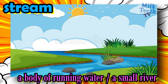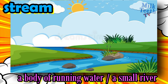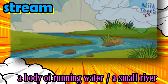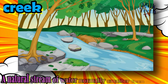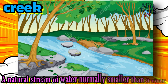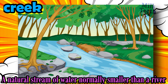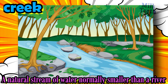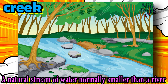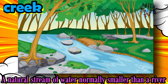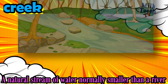Stream: a body of running water, a small river. Creek: a natural stream of water normally smaller than a river. Technically, a river, a stream, and a creek are the same bodies of water.